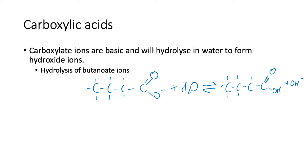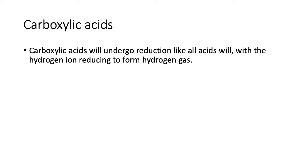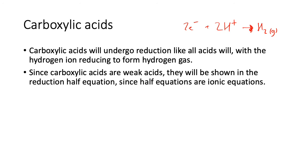Carboxylic acids will undergo reduction like all acids, with the hydrogen ion reducing to form hydrogen gas. With strong acids, you just have 2H+ goes to H2 gas plus 2e-. However, since carboxylic acids are weak acids, they have to be shown in the reduction half equations, since half equations are ionic equations.